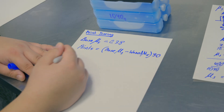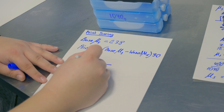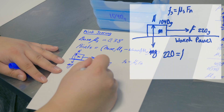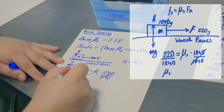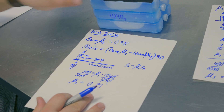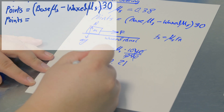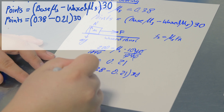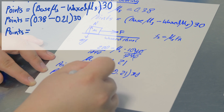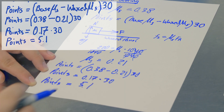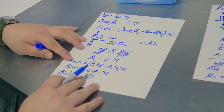To get the waxed static coefficient of friction, same process on the waxed panel. For example, if it takes 220 grams, then: μ = 220 ÷ 1040 = 0.21. Applying the formula: Points = (0.38 − 0.21) × 30 = 0.17 × 30 = 5.1. This hypothetical wax would score 5.1 points.